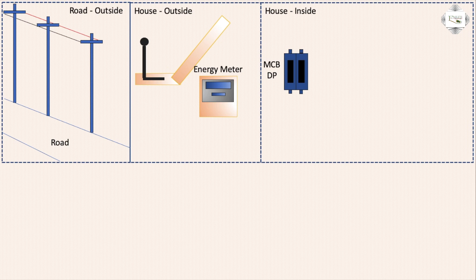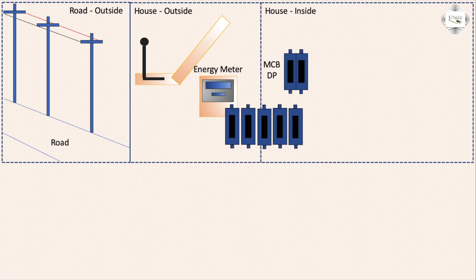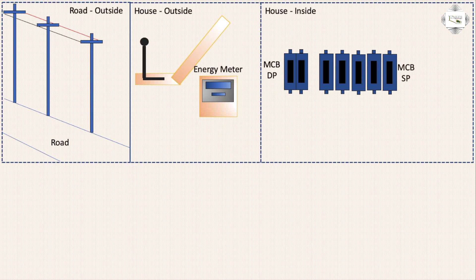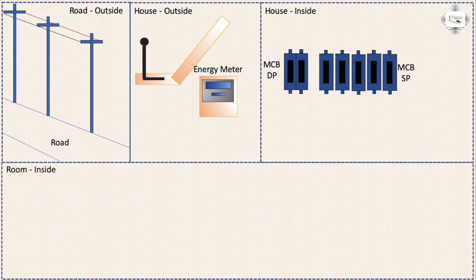MCB DP means double pole circuit breaker, or SP means single pole circuit breaker, outgoing to switchboard power switch connection. SP connection uses 10 ampere, 20 ampere, 16 ampere, or 32 ampere depending on capacity.